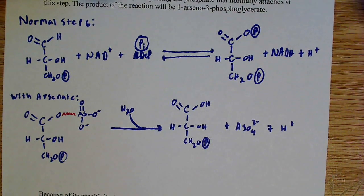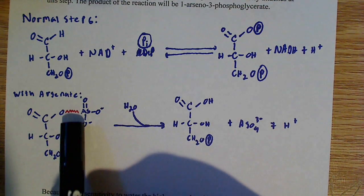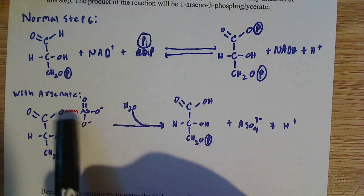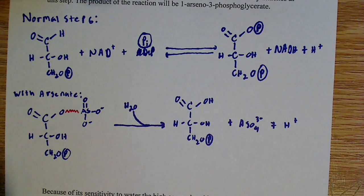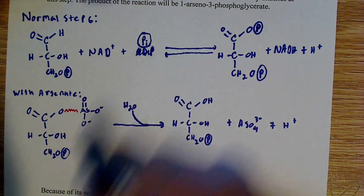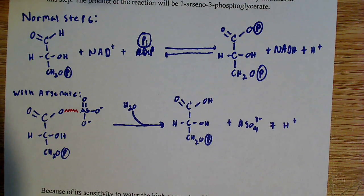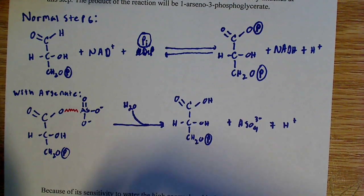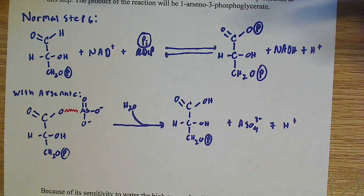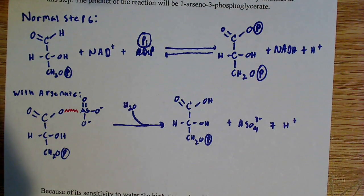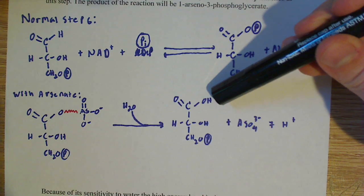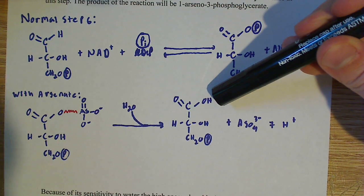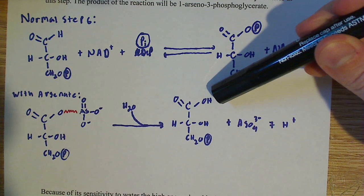But with arsenate, what can happen is you can have this high energy bond formed here, and this is an anhydride bond. It's in red because it's high energy, and that forms this product, 1-arseno-3-phosphoglycerate. Water comes in and hydrolyzes that bond. What we're left with is the product of what would be step seven in the glycolysis pathway, and that's 3-phosphoglycerate.